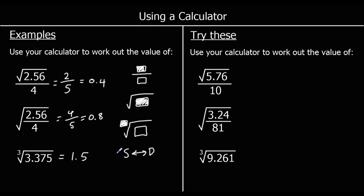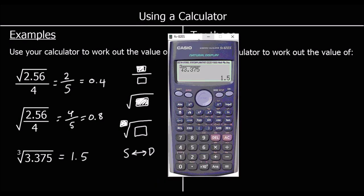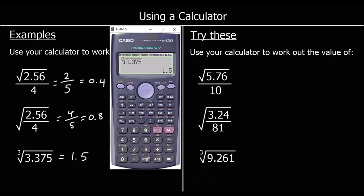There are 3 questions for you to try. For the first one, press the fraction button first, then on the top line the square root of 5.76. Then click across, then down, and on the bottom line put a 10. So we've got 6 over 25, or as a decimal, 0.24.